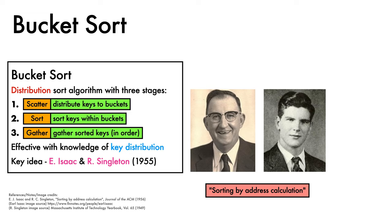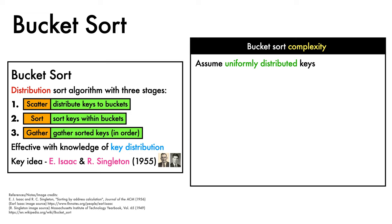From the perspective of complexity, when assuming uniformly distributed keys, the runtime of BucketSort for n keys when using b buckets is big theta of n plus n squared over b plus b in the average case.